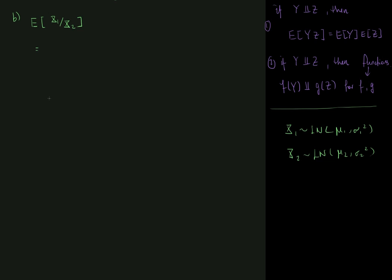First of all, we know that x1 and x2 are independent, and since they are independent, that implies that x1 and 1/x2 (x2 inverse) are also independent. That means we can split the mean of x1 divided by x2 into the mean of x1 multiplied by the mean of x2 to the minus first. Note that I cannot take the minus first outside the mean value operator. But the problem is significantly simplified since we do know the mean of x1: it is e to the mu1 plus sigma1 squared over two. We know that from the book.